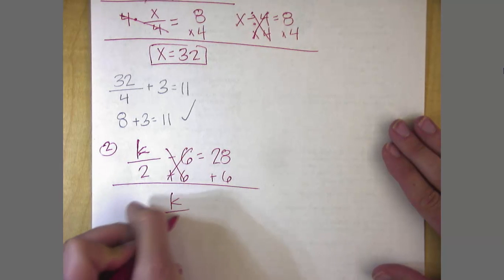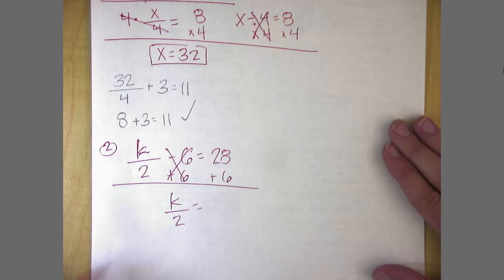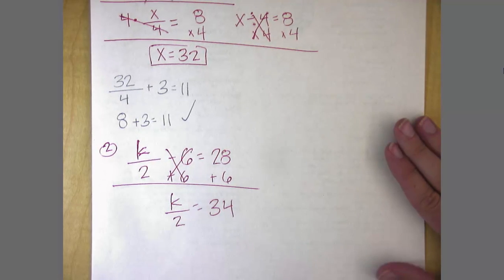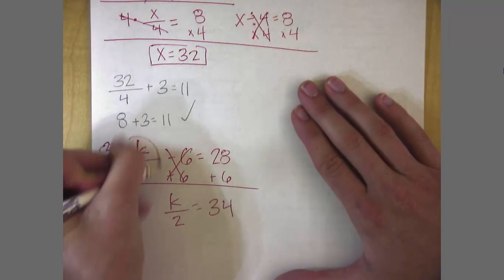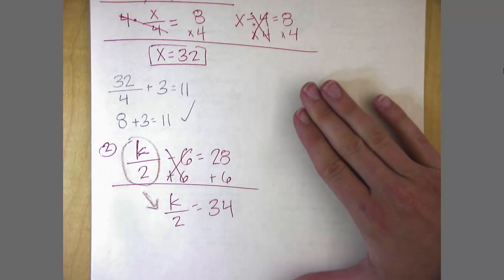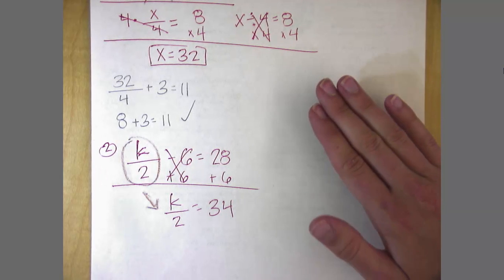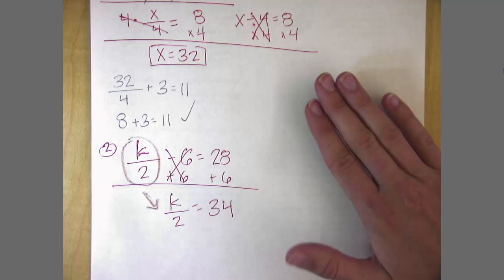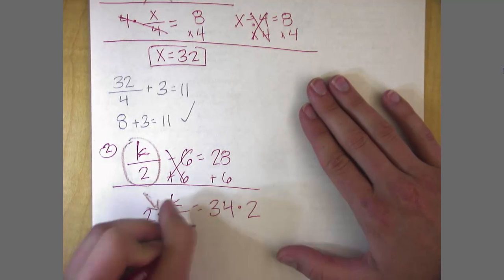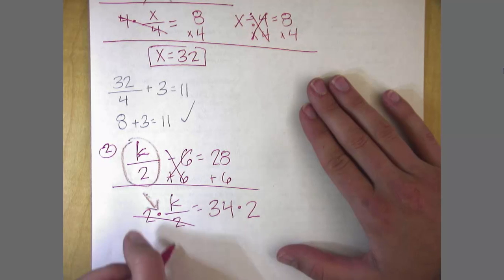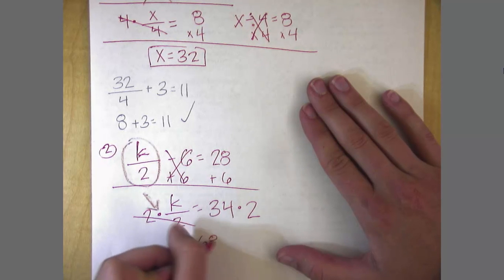This is k divided by 2 is equal to 34. Remember, it's not k is equal to 34. We're not done. We have to carry this whole thing right here. So, now to undo dividing by 2. Multiply by 2. And k is equal to 68.